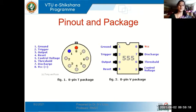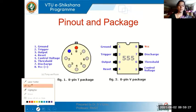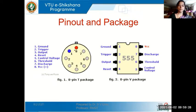Let's understand the 555 timer IC by looking at its pin-out diagram. It is basically an 8-pin IC, and all 8 pins are used for different purposes. Pin 1 is ground, pin 8 is VCC, and pin 2 is the trigger input, where we are going to connect an external trigger.